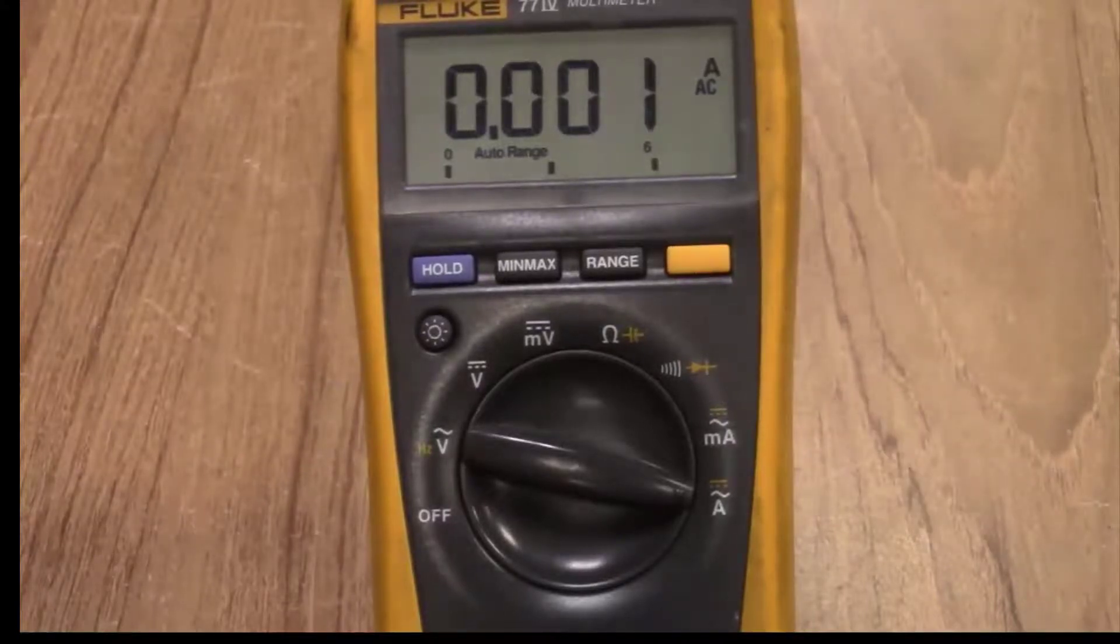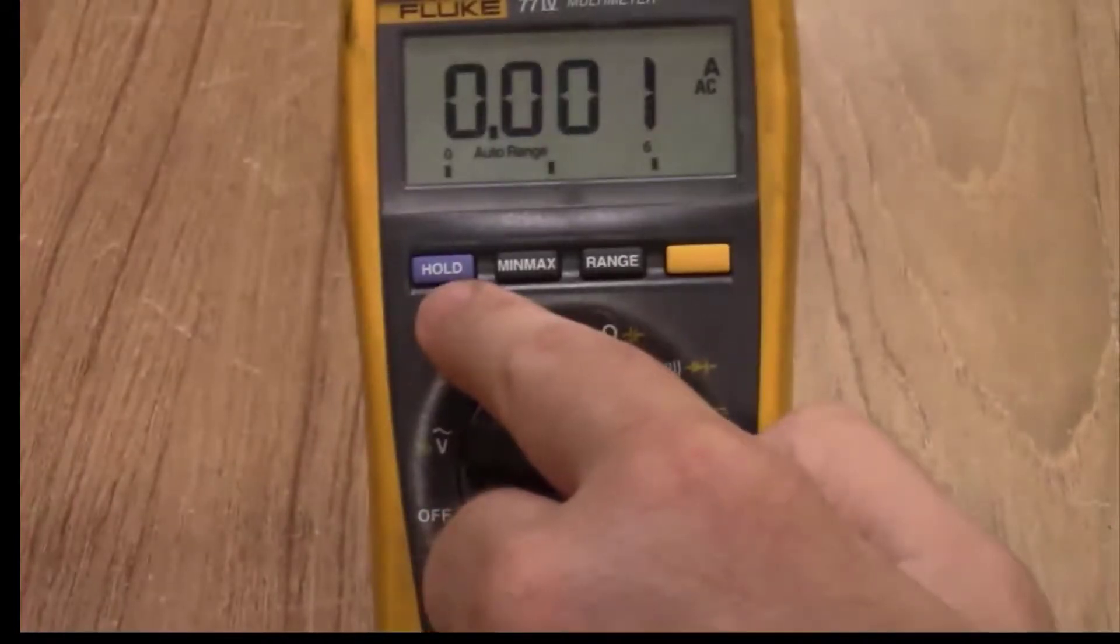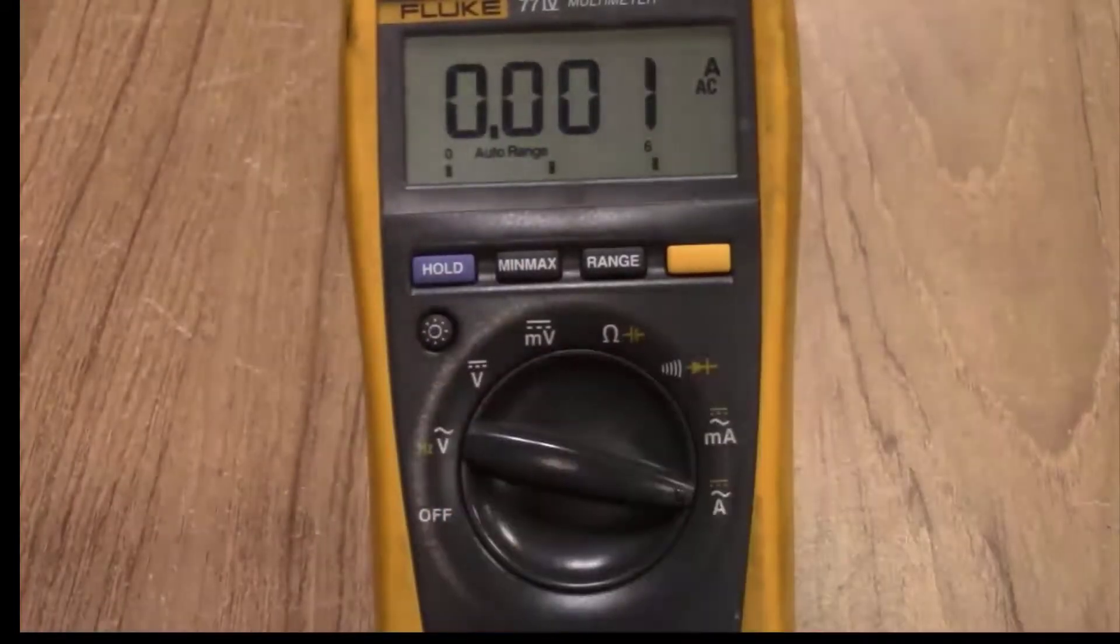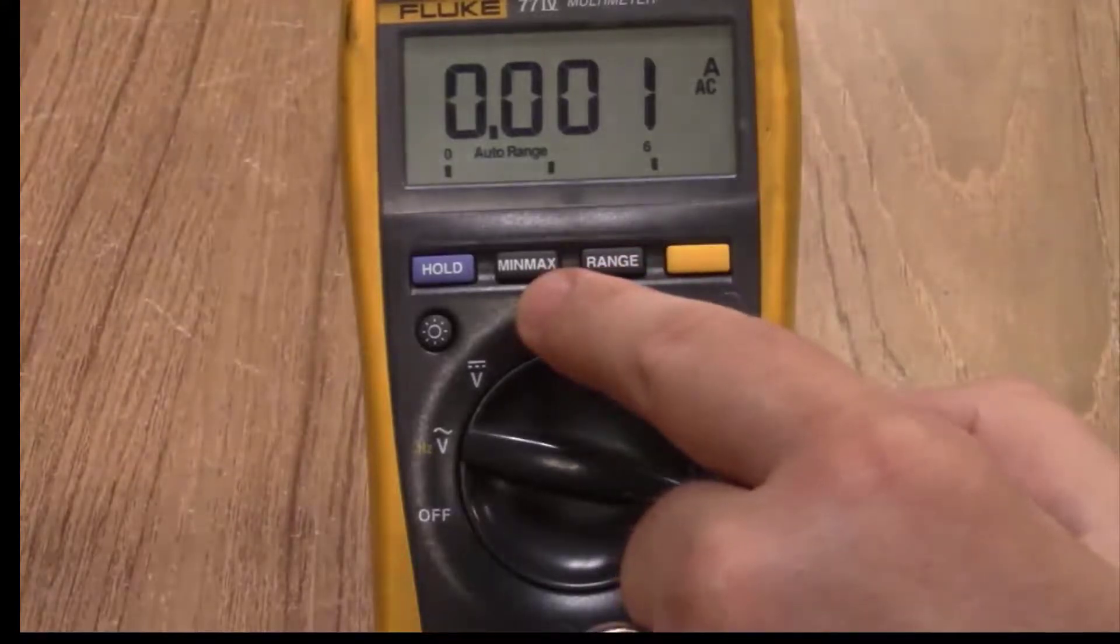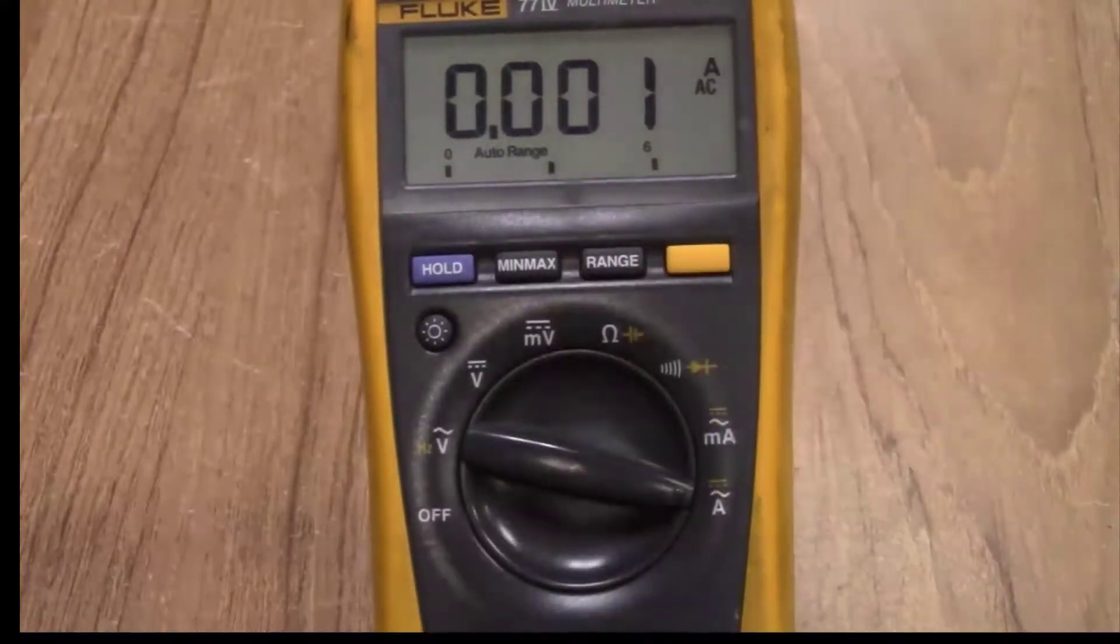The top buttons below the display you have a hold button that you can hold a particular measurement. You have a min and max. If you use this min and max button you can measure a minimum value and a maximum value and then get an average on those.